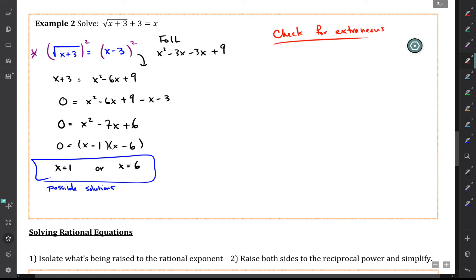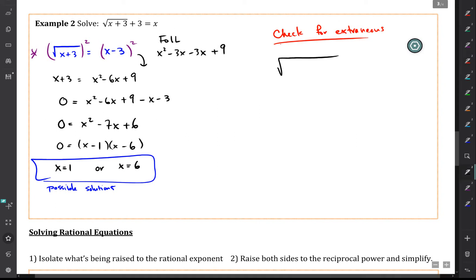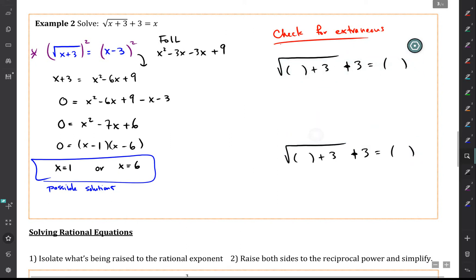So to do that, what you do is you write down your equation, square root of x plus 3 plus 3 equals x, and I've just put parentheses wherever there's an x. And you're going to write down as many copies of this as you need or as you have possible solutions.